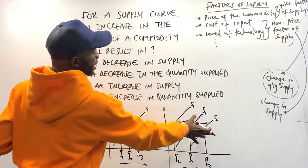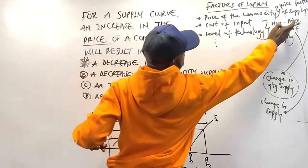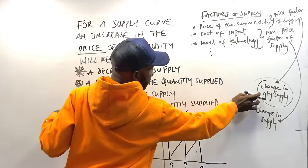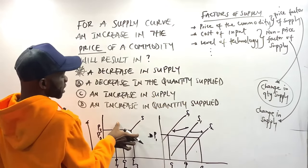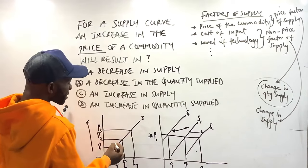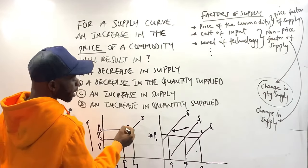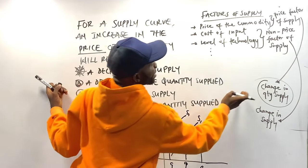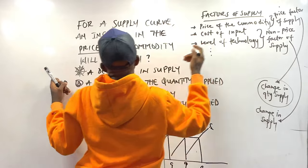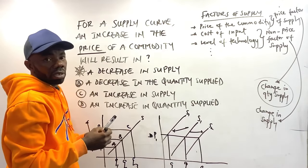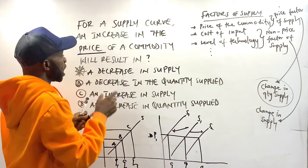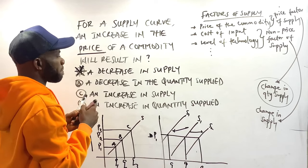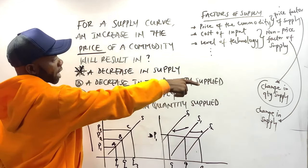In the change in quantity supplied diagram, at price 1 we have Q1, at price 2 we have Q2, at price 3 we have Q3. Price has to change for quantity to change. Other factors are responsible for change in supply. Another name for change in quantity supplied is movement along the supply curve. Option A is not determined by price, but by other factors affecting supply.